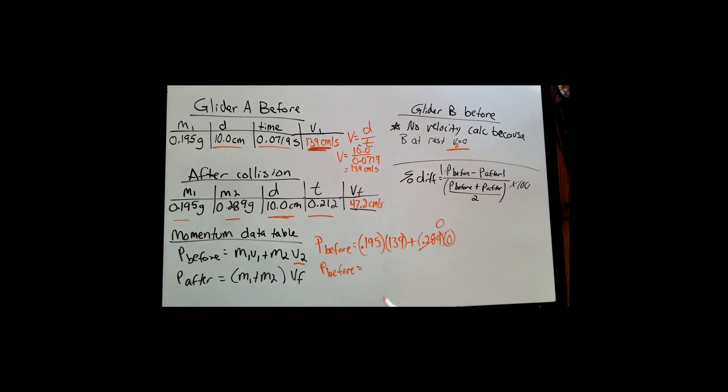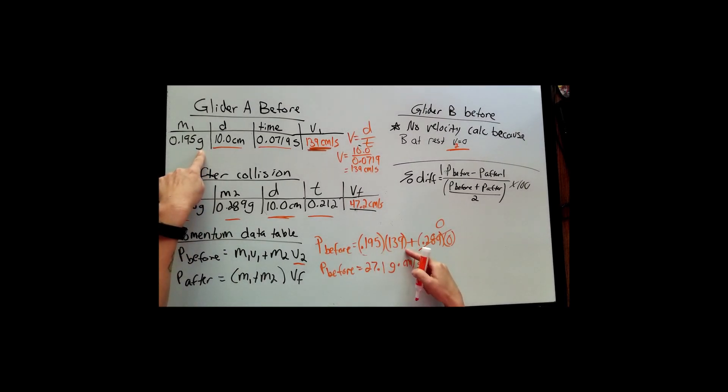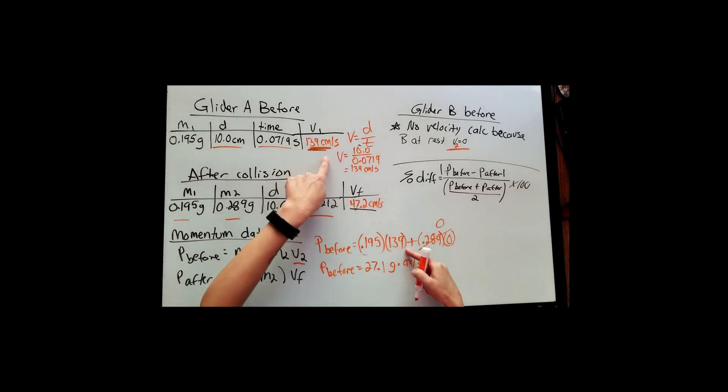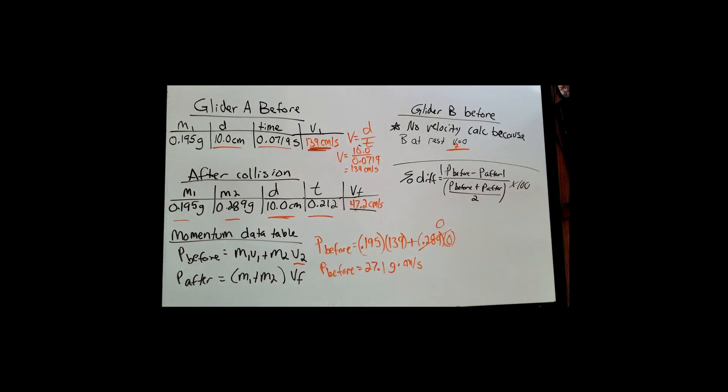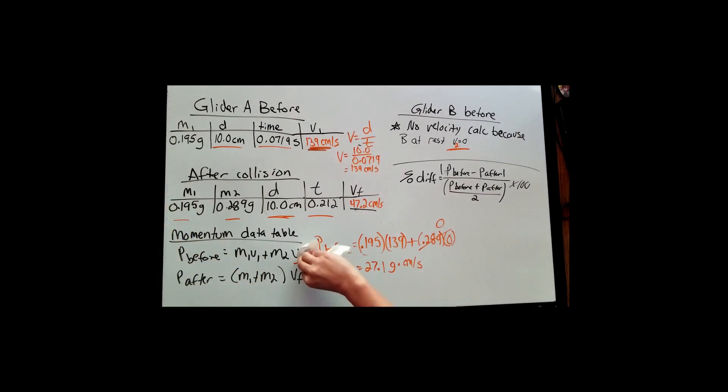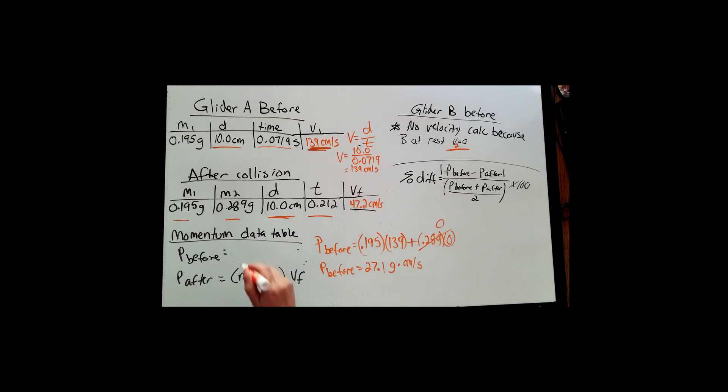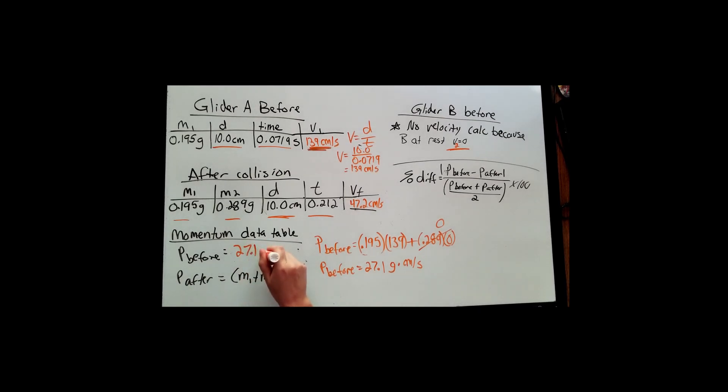0.289 times 0 is just equal to 0. So to calculate the before, we are just taking 0.195, the mass of glider 1, multiplied by 139, the velocity of glider 1. And we get three sig figs, 27.1. And the units on momentum are grams, in this case, grams times centimeter per second, because this mass here is in grams and we're multiplying that by the velocity. And the velocity in this problem is centimeters per second. So I'm going to erase this here and fill in the answer we have so that it's ready for our next calculation.